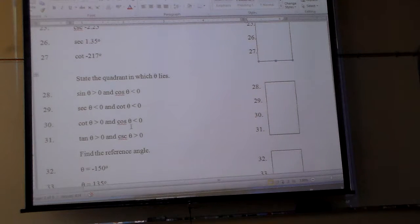On problems 28 through 31, we have to find the quadrant it lies in. The best thing would probably be to do this here. Sine is what? Look at 28. Sine is positive and cosine is what? Negative.